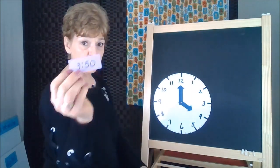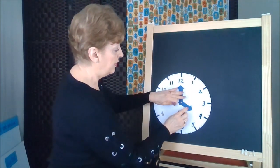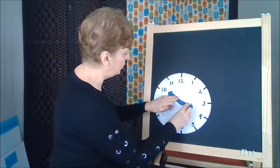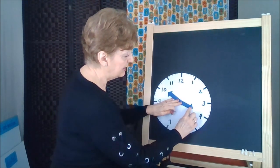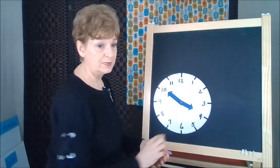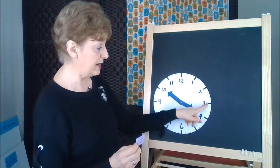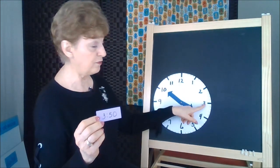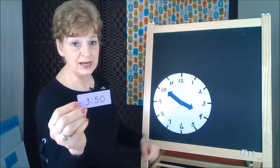So when we have 3, 50, the clock looks like this. It's not on the 4 yet. It's close though. But as long as it's between the numbers, we back up to the number that is before. So this would be 3, 50.